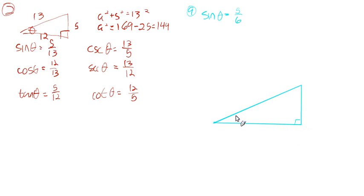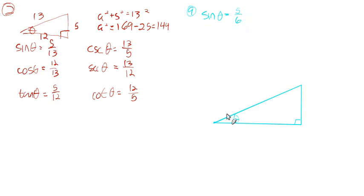Let's draw ourselves a right triangle. Let's throw the angle down here — an angle over here, an angle here, right angle over here. We want this angle to have a sine of 5 over 6. So if the sine turns out to be 5 over 6, the opposite over the hypotenuse would be 5 over 6. We could just take 5 to be the opposite side and 6 to be the hypotenuse. That's the simplest way to go.